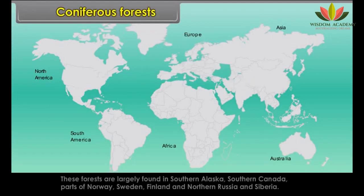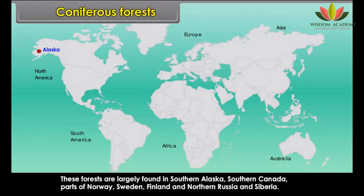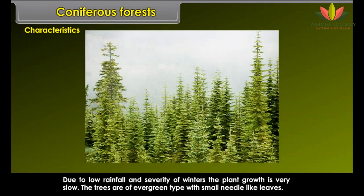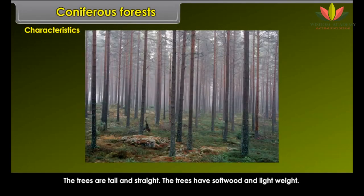Coniferous Forests are largely found in southern Alaska, southern Canada, parts of Norway, Sweden, Finland, northern Russia and Siberia. Characteristics: The winters are very cold and severe and summers are warm and of short duration. This climate largely controls the growth of plant life. Due to low rainfall and the severity of winters, plant growth is very slow. The trees are of evergreen type with small needle-like leaves and are tall and straight.